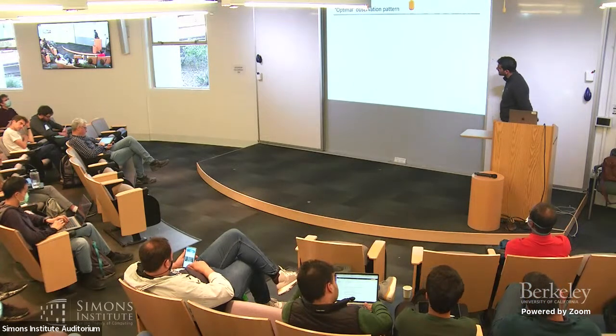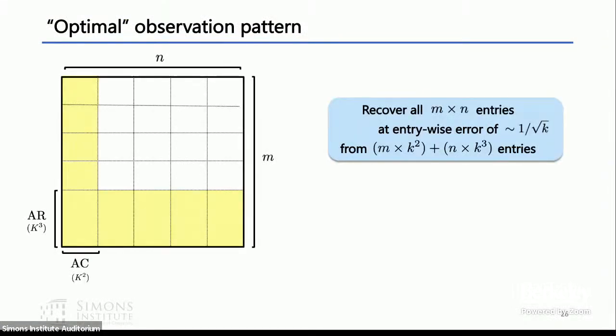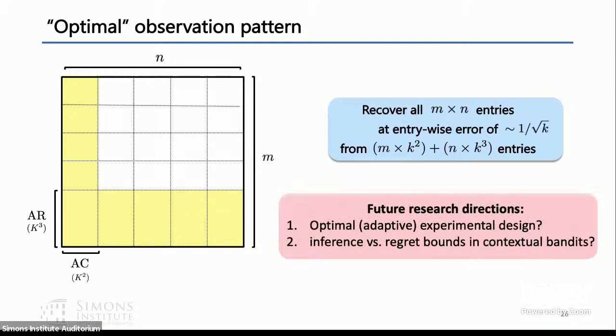Another thing we're thinking about is what is the most sample efficient pattern for the data we looked at, and it looks like this L. With this kind of L structure, you can recover all M times N entries at rate 1 over square root k when you observe M times k squared plus N times k cubed entries. In particular, the M and N do not show up as a product, but in an additive way, which is the best you can hope for. Some interesting things to think about is that maybe this has implications for experimental design. You can think about your problem of experimental design through a matrix. And given the fact that problems in contextual bandits can be thought of as a matrix, maybe there's some interesting implications for inference versus regret balance in contextual bandits.